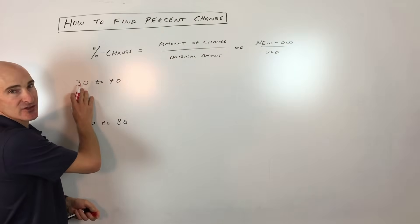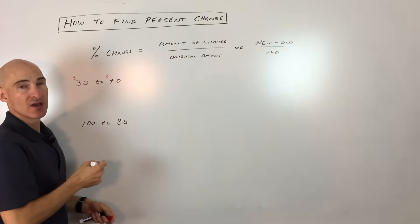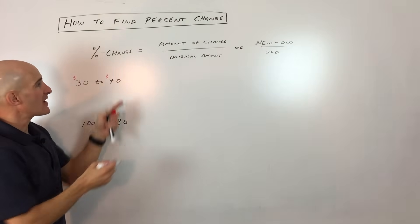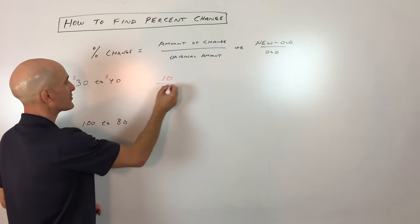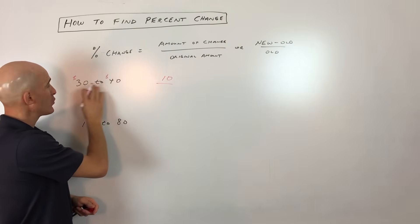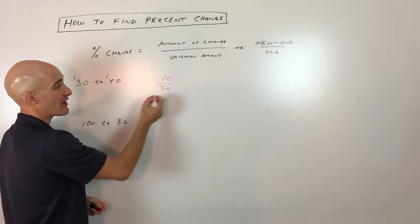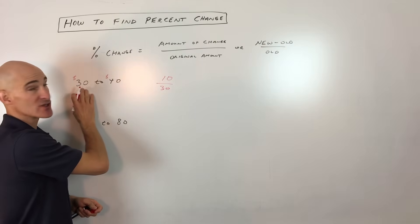So say something's $30, and now it's $40. You can see that it's increasing by $10. So we're just going to say $10, but compared to what? Compared to $40 or compared to $30? Compared to $30, because you want to see how it's changing compared to how much it was originally.